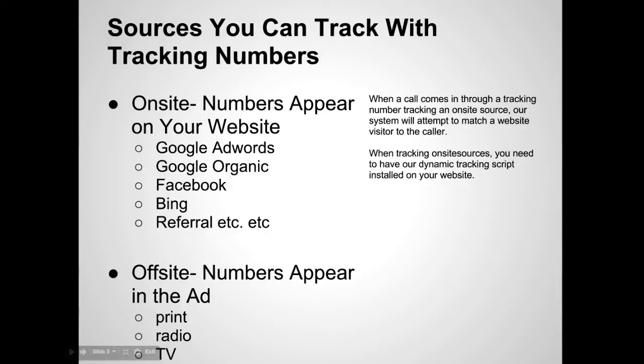There are different sources you can track with our tracking numbers. On-site sources are numbers that appear on your website, so tracking numbers using an on-site source would be tracking things like Google AdWords, Google Organic, or Facebook. Off-site numbers are tracking sources that appear off of your website, in places like TV ads, print ads, or radio ads.